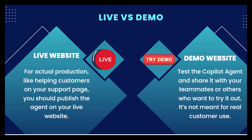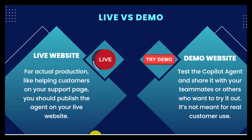A demo website is for trying purposes. Suppose you have created one agent and you want to try out how it is functioning — to test the copilot agent, you can share it with your teammates or others who want to try it out. It's not meant for real customer use. If you want to try out that agent, you can use the demo website — create one, copy the link, and share it with users so they can access and start a conversation with the chatbot.